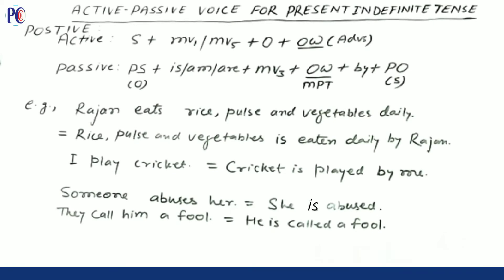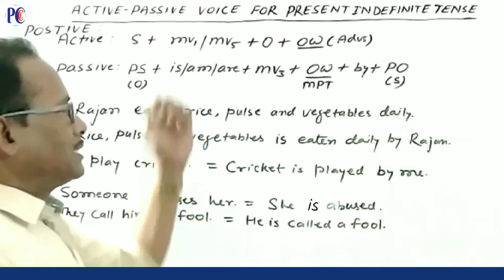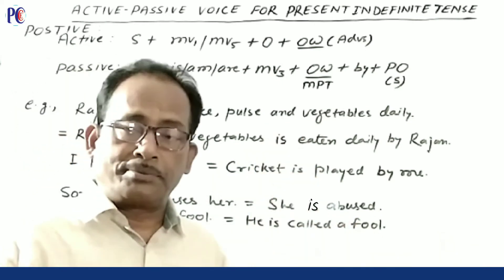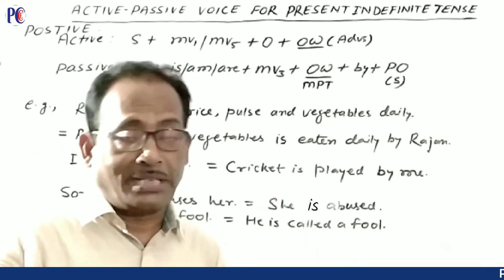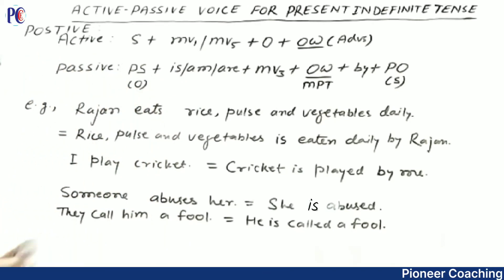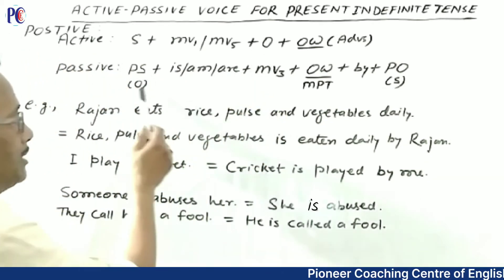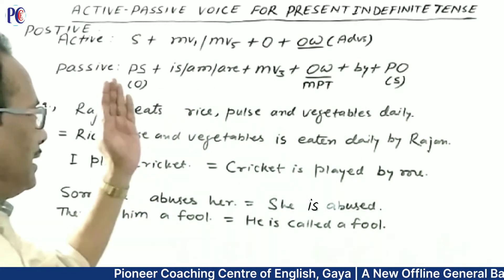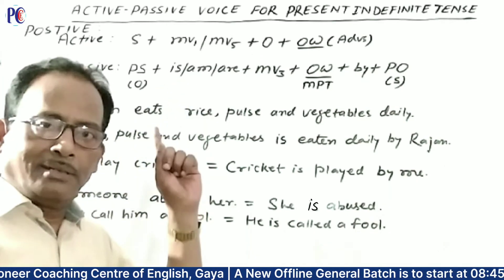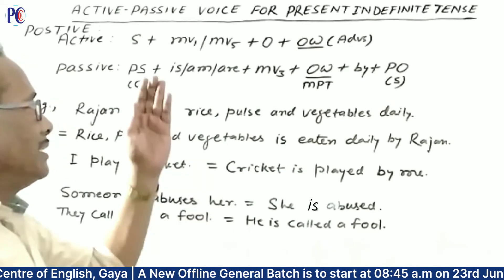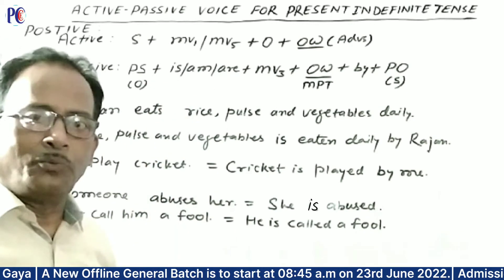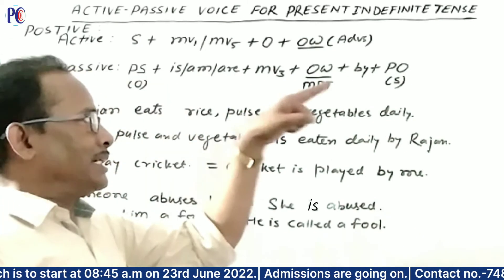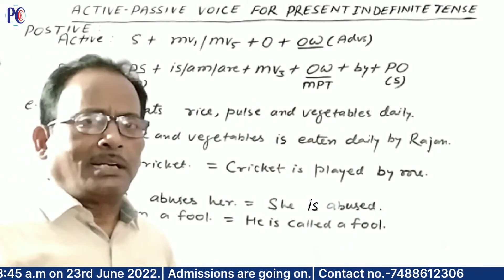In the present indefinite tense, the active structure is: Subject plus verb form one or five, plus object, plus other words — where other words means adverbs — in a positive or affirmative sentence. When you make it passive, you move the object to become the passive subject, followed by 'is' or 'are' as per the passive subject, then main verb three (past participle), then other words, and then the active subject as the passive object, generally with the preposition 'by'.